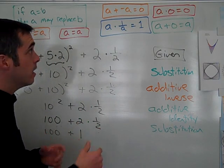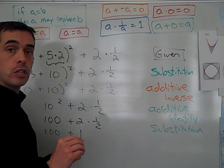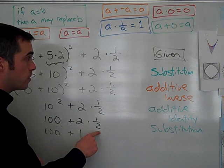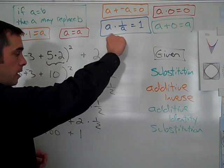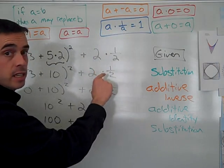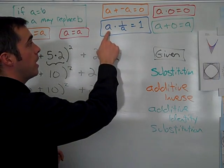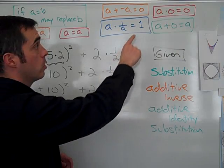And that, again, could mistakenly be called substitution, but there is a stronger, more accurate property of equality for that. 2 times 1 half looks a lot like this. A number times its multiplicative inverse equals 1. Another way of saying that is a number times its reciprocal equals 1.